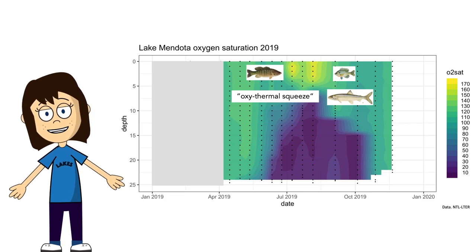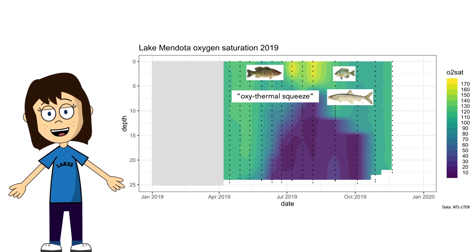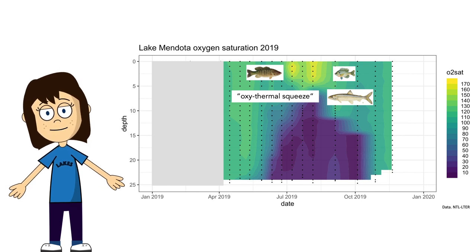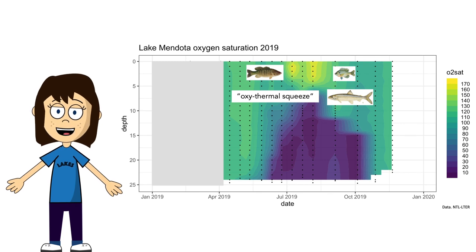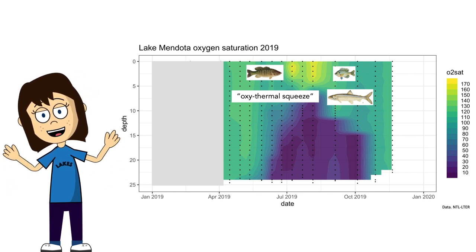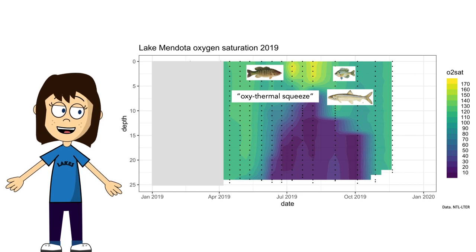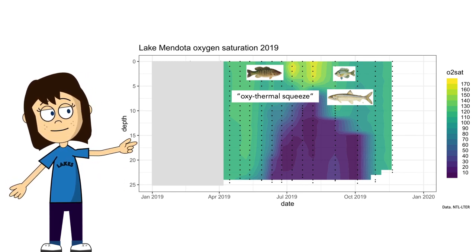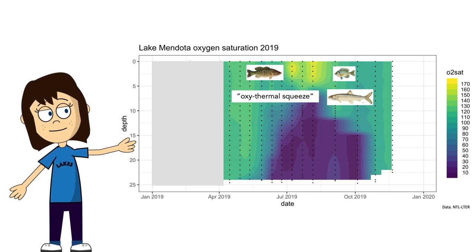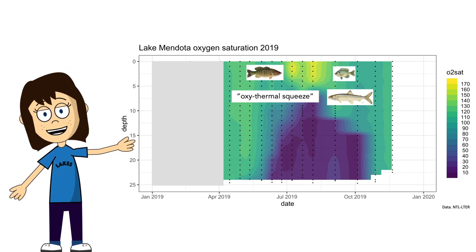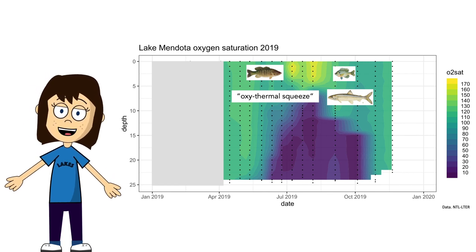Beyond the problems we see at the surface during big phytoplankton blooms, another devastating consequence happens below the surface where we can't see it. When phytoplankton die, their biomass is consumed by microbes. Those microbes feast on phytoplankton in Lake Mendota in the summer, but this process of decomposition uses up oxygen — those microbes are respirating. So what we see is that Lake Mendota loses oxygen in the bottom of the lake during the summer. Here's a graph of oxygen saturation in Mendota between April and November 2019 — the area in purple is where there's no oxygen, and this oxygen consumption is a direct result of too many phytoplankton.